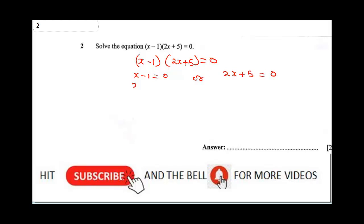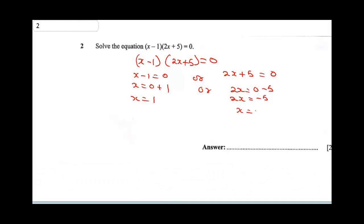Collecting like terms, x will be equal to 0 + 1 and x will be 1. Or you say 2x will be equal to 0 - 5, so 2x will be -5 and x will be -5/2. So the final answer will be -5/2.